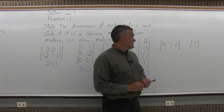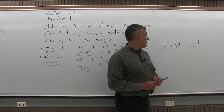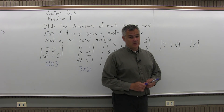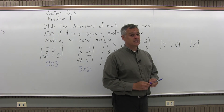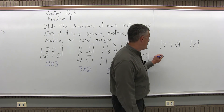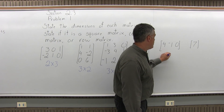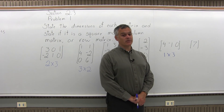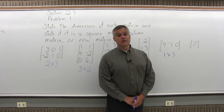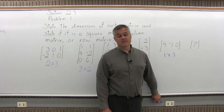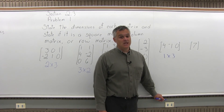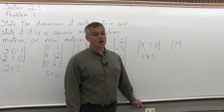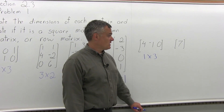The next matrix has 4, negative 1, 0 — and that's the whole matrix in 1 row. Its dimensions are 1 by 3, written 1×3. Is it a square matrix? No, because it does not have the same number of rows as columns. It is a row matrix, though, because it has only 1 row — but not a column matrix, because it has more than 1 column.